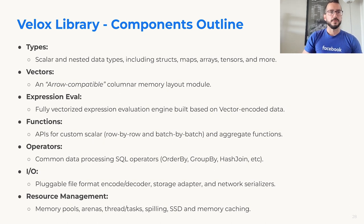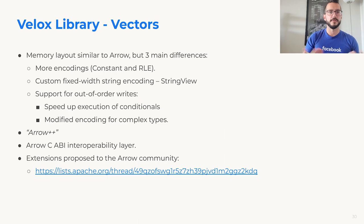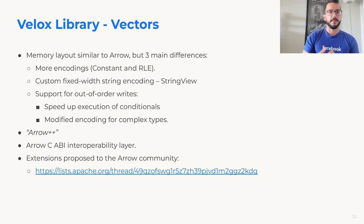For this presentation, due to time restrictions, I'm going to focus only on vectors, expression evaluation, and functions. Velox vectors are very similar to Arrow — the memory layout follows the Arrow format, but has three main differences. First, we provide more encodings: in addition to everything Arrow provides, we also provide constant encoding (vectors that only hold a single value) and run-length encoding. Second, our string representation is slightly different. Third, we provide support for out-of-order writes, mostly to speed up the execution of conditionals. This means we need a different representation for complex types like arrays, maps, and structs.